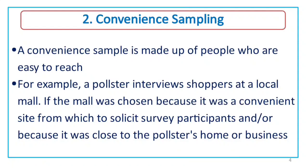Convenience sampling is a non-probability sampling method made up of people who are easy to reach. For example, an interviewer goes to a shopping mall or convenience store, surveys products, shows a TV or cinema advertisement, and collects data. This method does not apply a strict probability concept, but it is an advantage of non-probability sampling as it is less time-consuming and less costly than probability sampling.